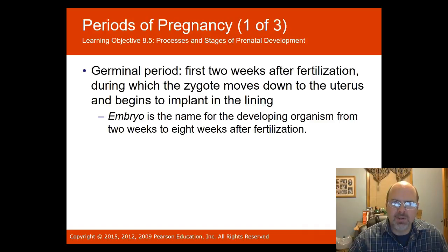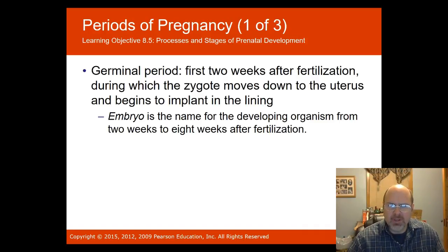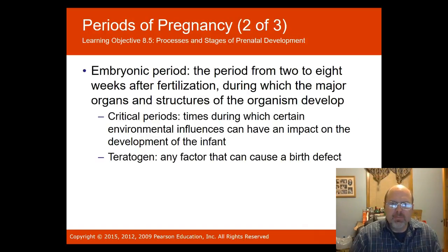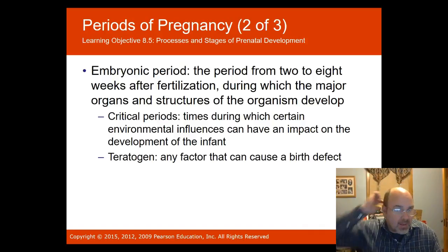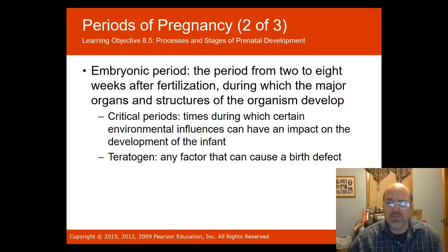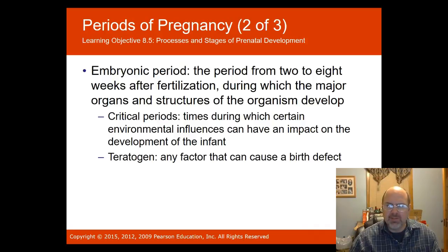The germinal period is the first two weeks after fertilization, during which the zygote moves down the uterus and begins to implant in the lining. The embryo is the name for the developing organism from two weeks to eight weeks after fertilization. The embryonic period, from two to eight weeks, is considered the critical period — certain environmental influences can impact development during specific times, such as structural development of arms and legs from three-and-a-half to eight weeks, heart structure from two-and-a-half to six-and-a-half weeks, and central nervous system formation from two to five weeks.